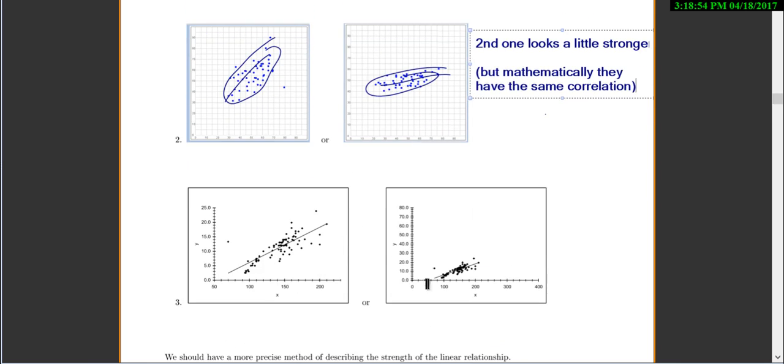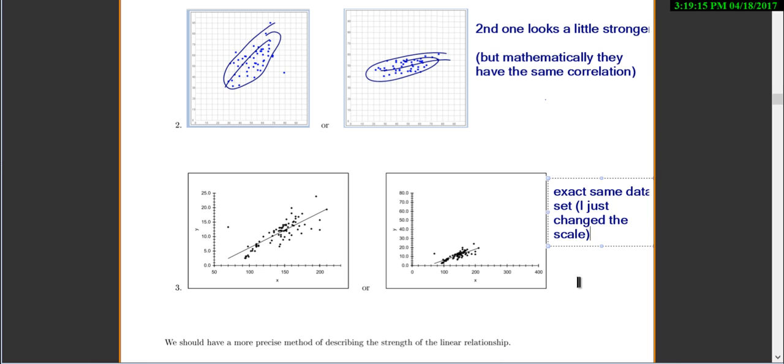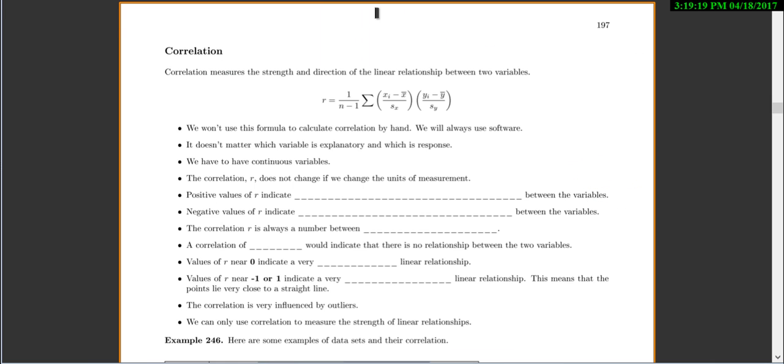And these last two, this one seems like it's closer to the line, but it's actually the exact same data set. I just changed the scale. So I wanted to emphasize here that you don't just want to try and measure the strength by looking out with your eyes. We want a more precise mathematical way to look at the strength of the relationship. And that's why we invented correlation.